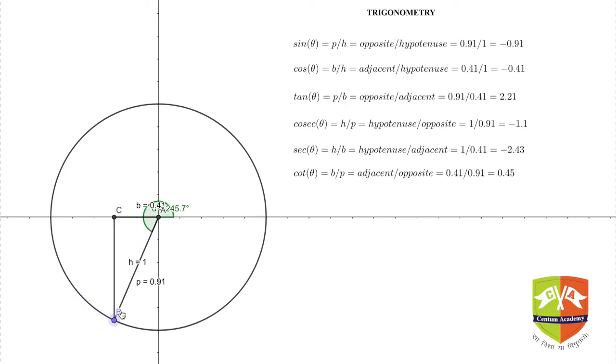As I move point B again, you can see the base is shrinking, perpendicular is increasing. In fourth quadrant, as I am moving towards 360 degrees, base is increasing again, perpendicular is shrinking, and cos values are positive. All others are negative. Cos and sec are positive, all others are negative.